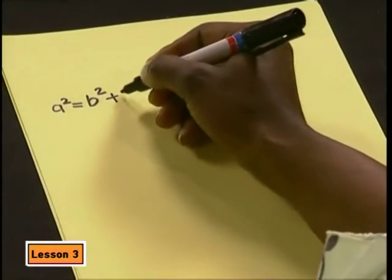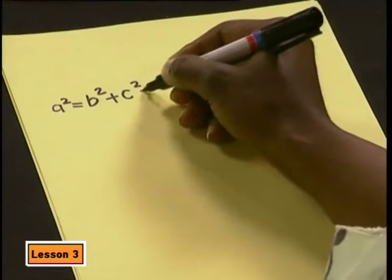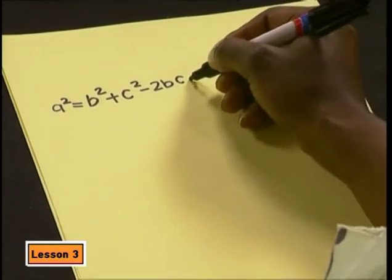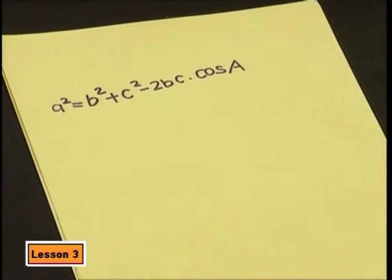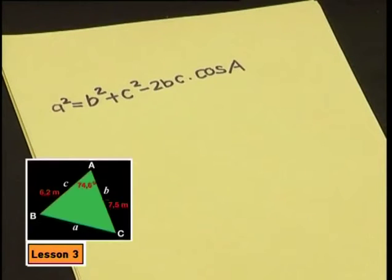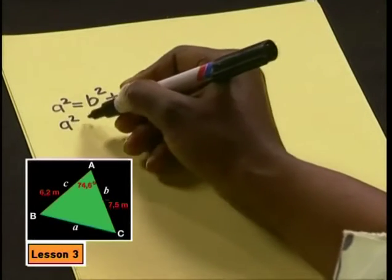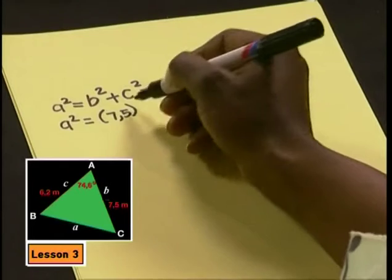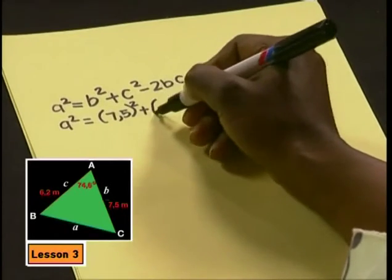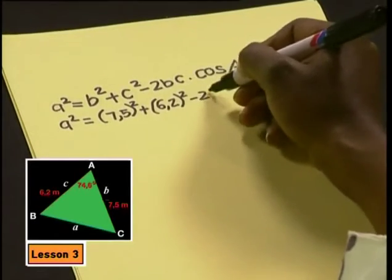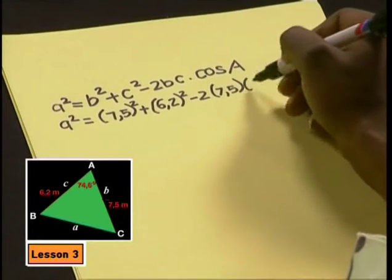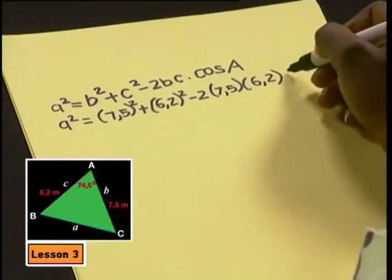The cosine rule says that A squared is equal to B squared plus C squared minus 2 times B times C times cos A. Now, let's see what values we can put into that equation. A squared, that's what we're looking for. How about B squared? That will be 7.5 squared. And C squared will be 6.2 squared. Great. Then minus 2 times 7.5 times 6.2 times cos A. And the angle A is 74.6.